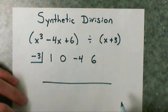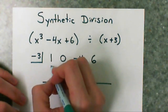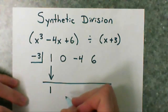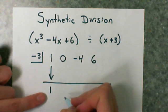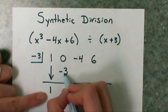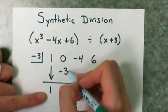Skip a row and place a line underneath. I'm going to bring the 1 down. Then I say negative 3 times 1 is negative 3. I'm going to add those.